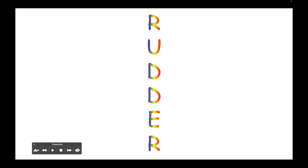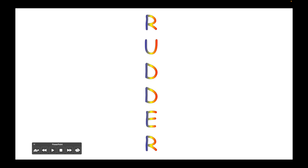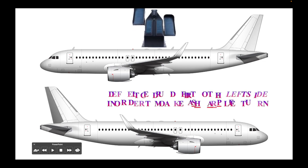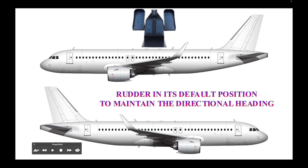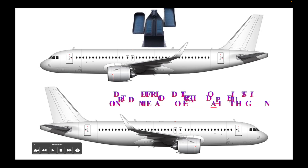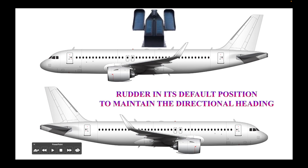The next primary flight control we will discuss is the rudder. Just like in a boat, this vertical element will make the airplane move left or right. This vertical stabilizer element is moved by pushing one of the pedals. The rudder is responsible for changing the heading of the airplane — its direction: north, south, east, or west. By default, the rudder has the same position as the vertical stabilizer.